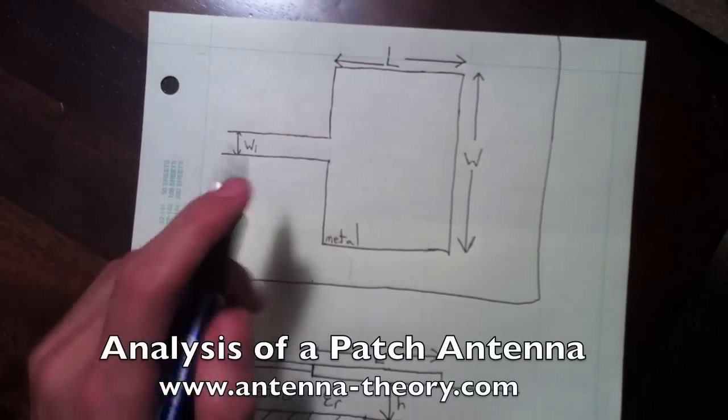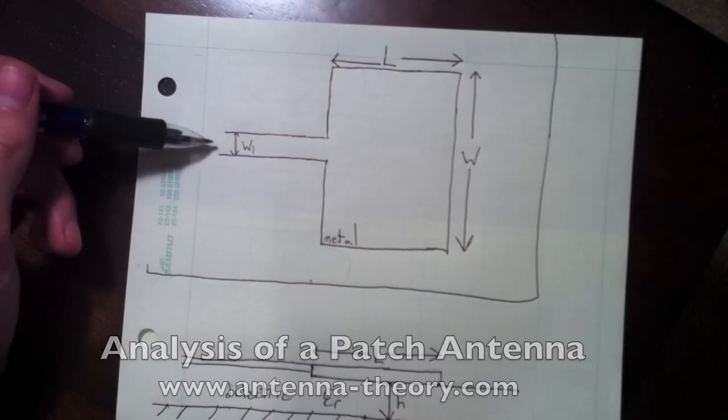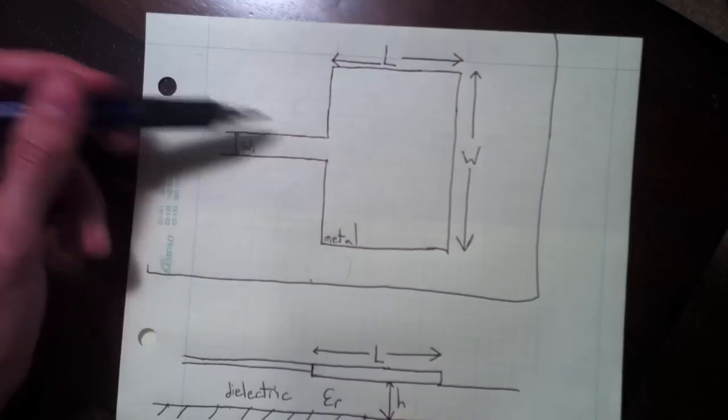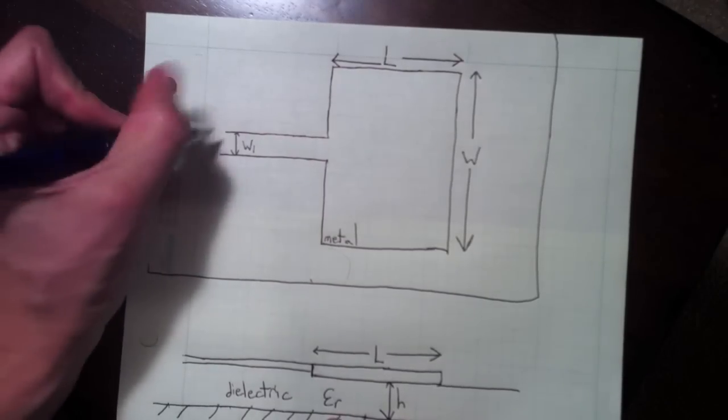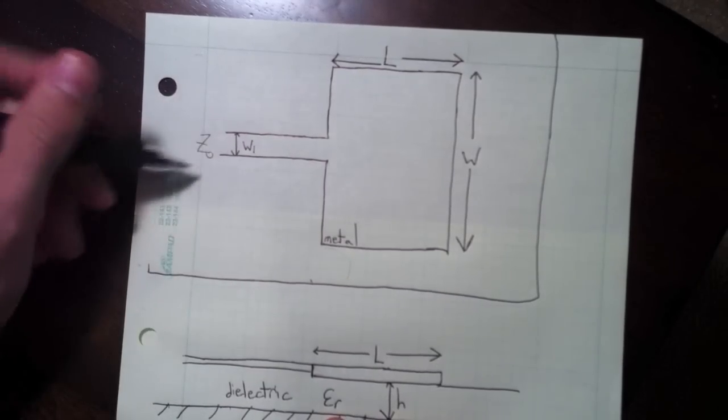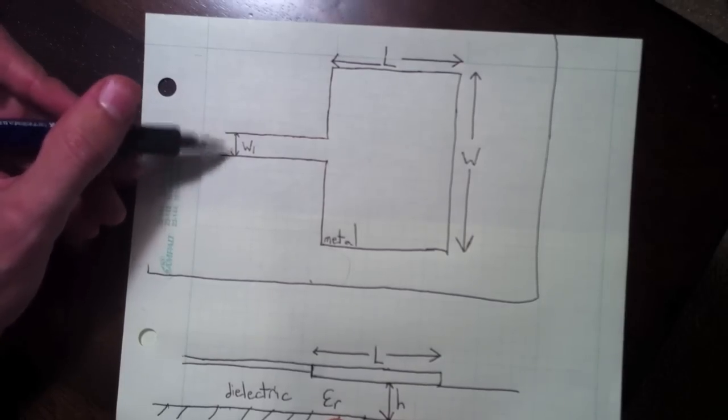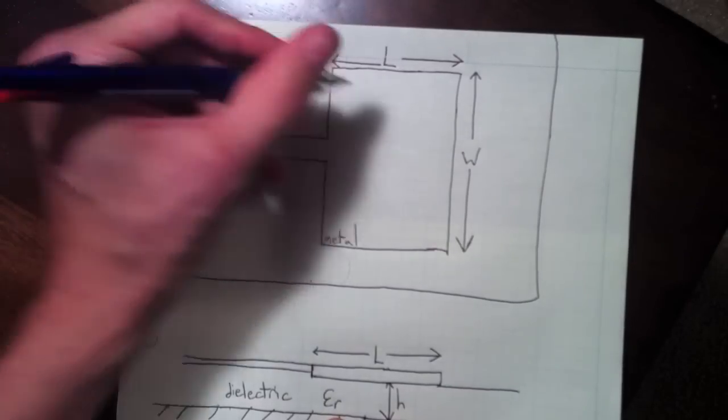So here is a basic top view of a patch antenna. Assume this is a microstrip transmission line that connects to it, which is 50 ohms or whatever you want it to be. And then here's our patch antenna.